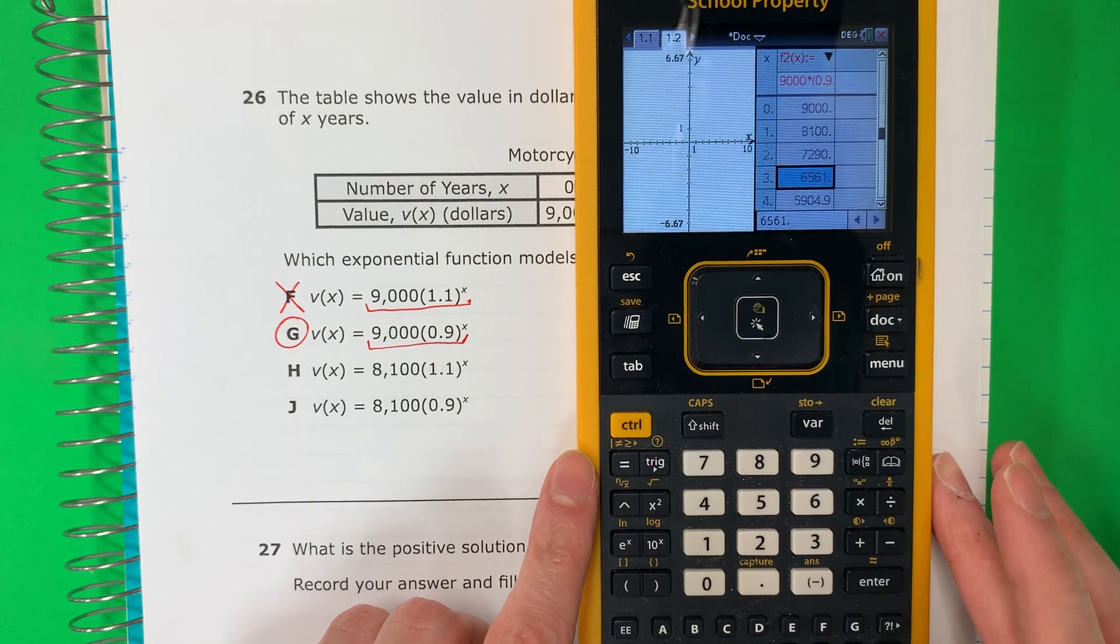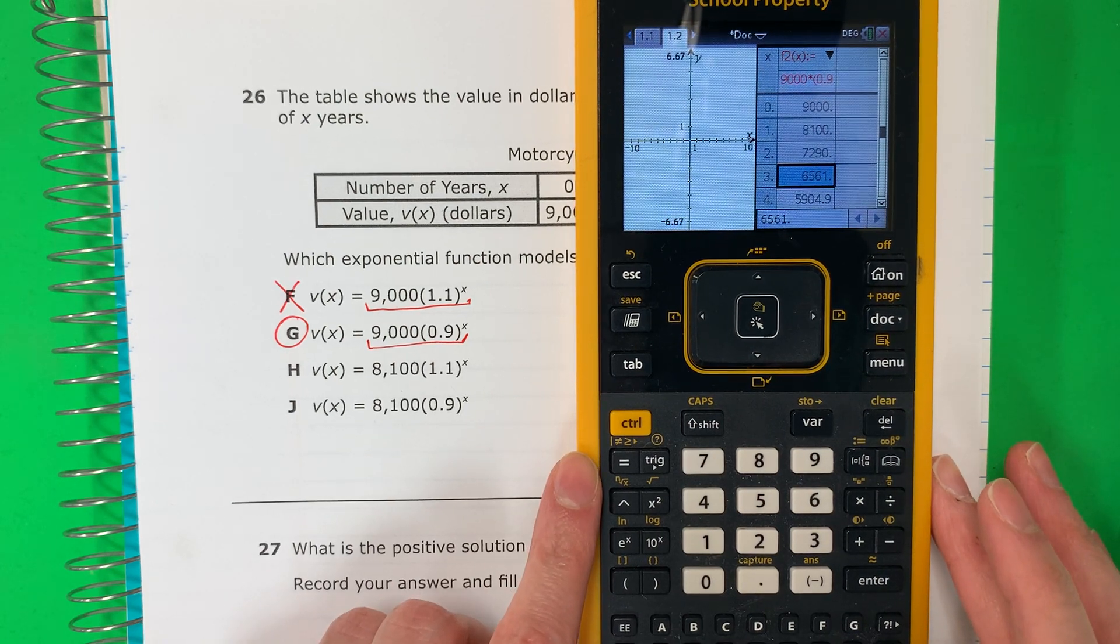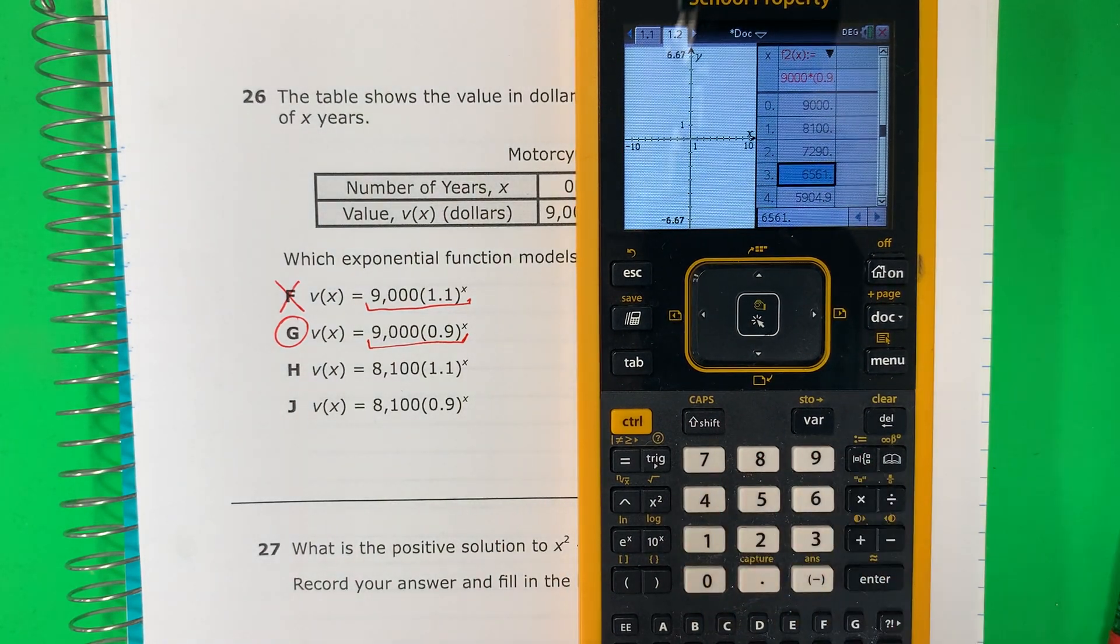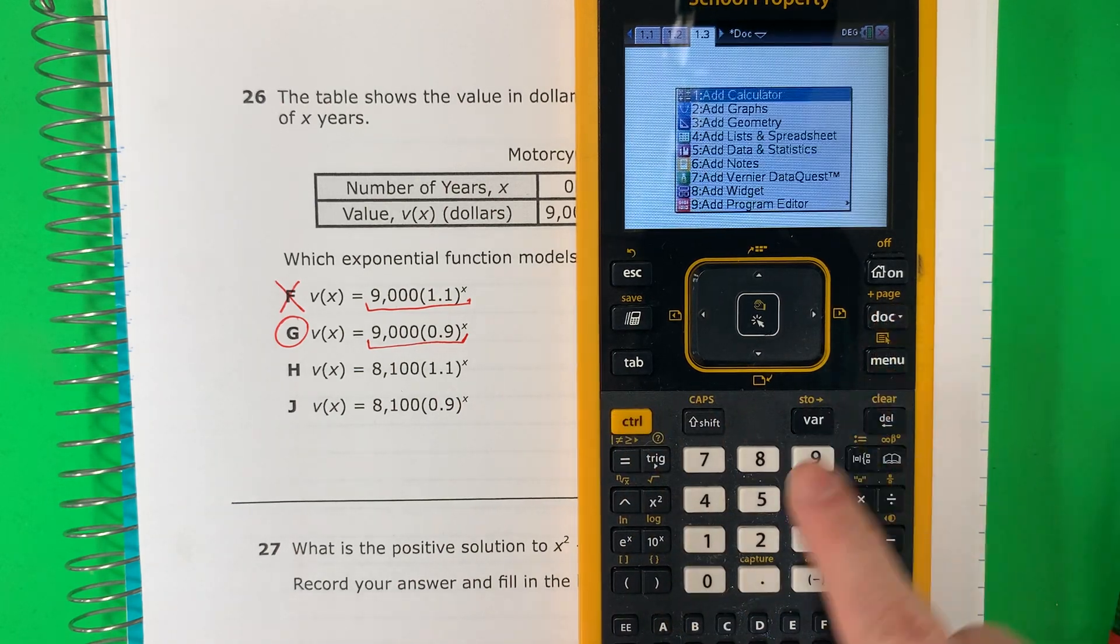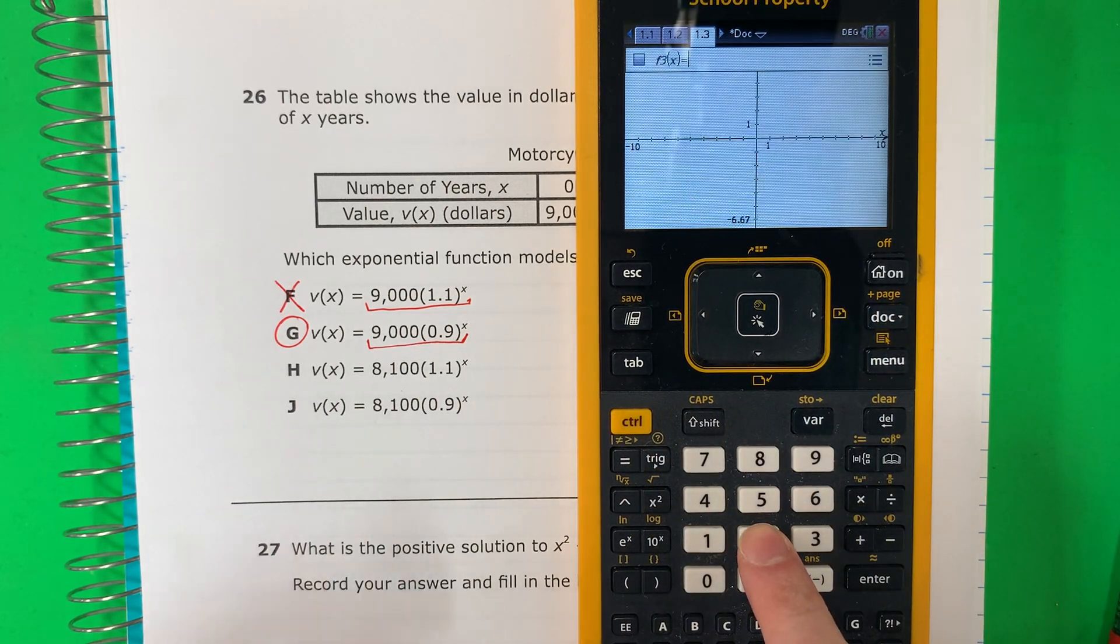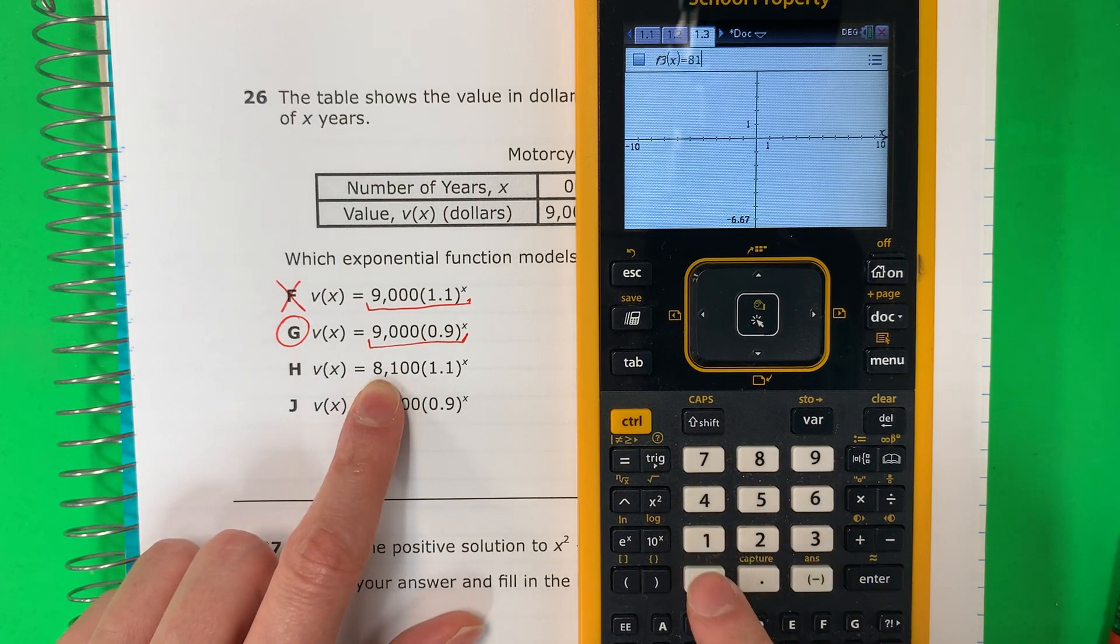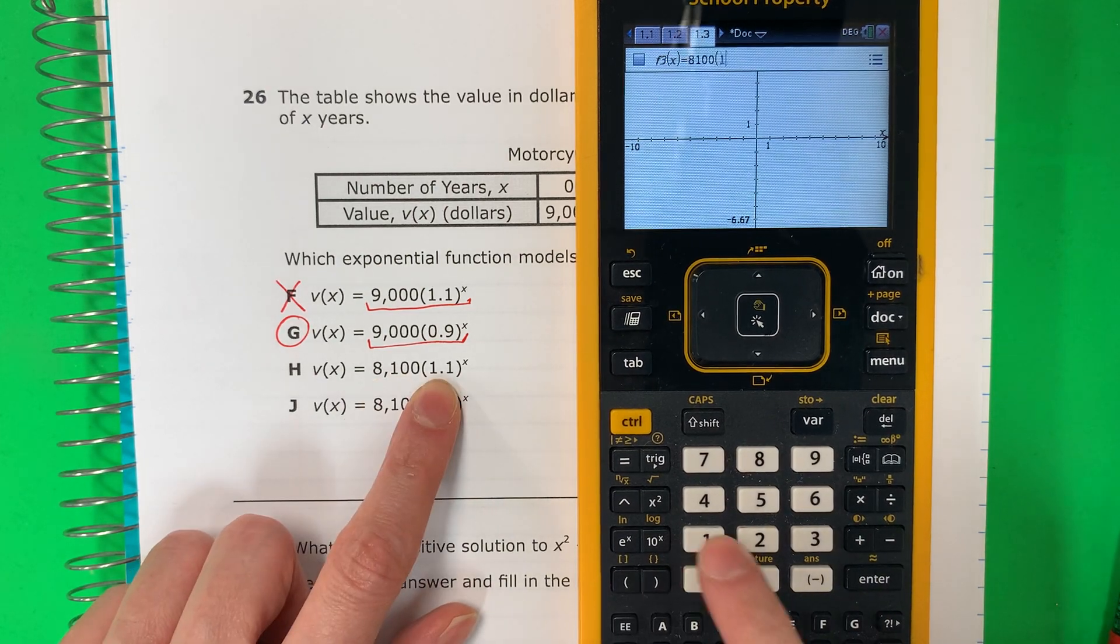Let's do another one just to practice. Vamos a hacer una más solo para practicar. Okay. So new tab. Nueva pestaña. Control. Dock. 2. Dos. Let's put 8,100. Parenthesis. 1.1. Parenthesis.